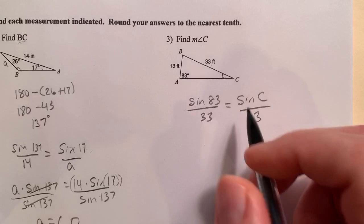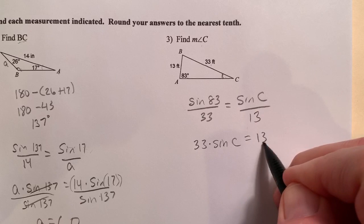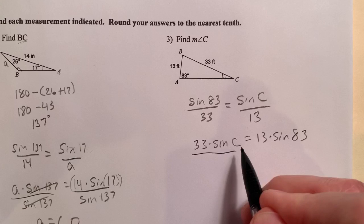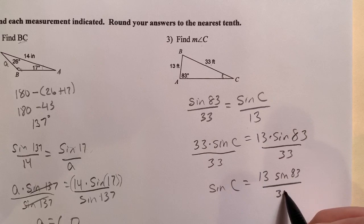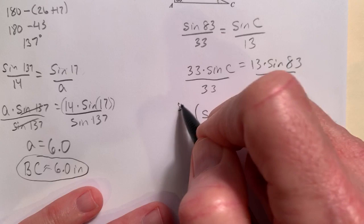Another proportion, we're just going to go ahead and solve it cross product. So let's go 33 times sine of C equals 13 times sine of 83. Divide both sides by 33. So I get sine of C equals 13 sine of 83 all over 33. Now, in order to get the C all by itself, I need to do sine inverse of both sides.